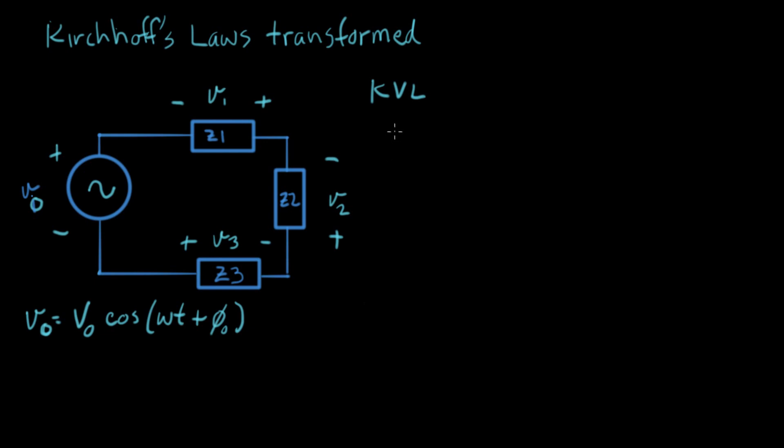In time domain, we say that V₀ + V₁ + V₂ + V₃ equals zero. So let's talk about how this is gonna turn out.